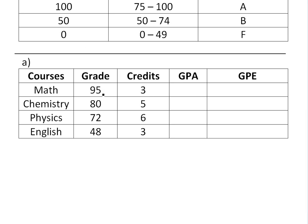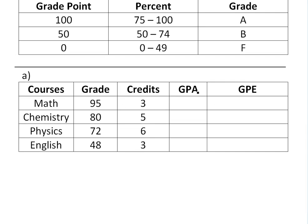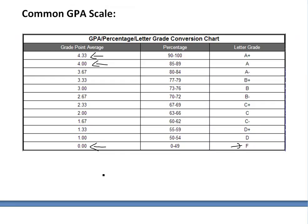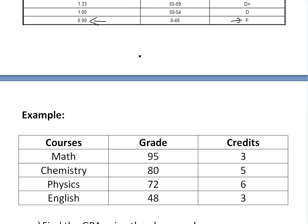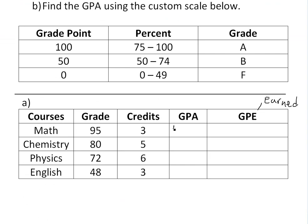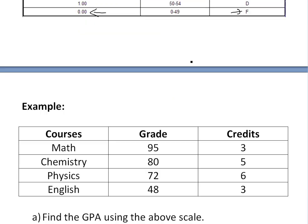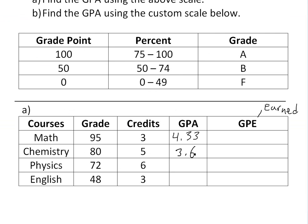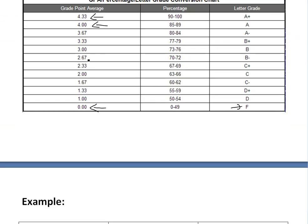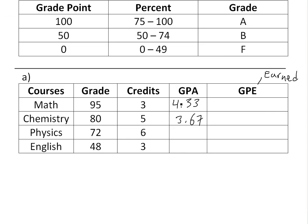For Part A, I've copied the courses and added two columns: GPA (per course) and GPE (grade points earned). For math, we got 95 — looking at the scale, that's between 90 and 100, so it's worth 4.33, an A+. For chemistry we got 80, which is worth 3.67. Physics is 72, so that's a 2.67. And English, we got 48 — that's below 50, so that's 0 grade points for that course.